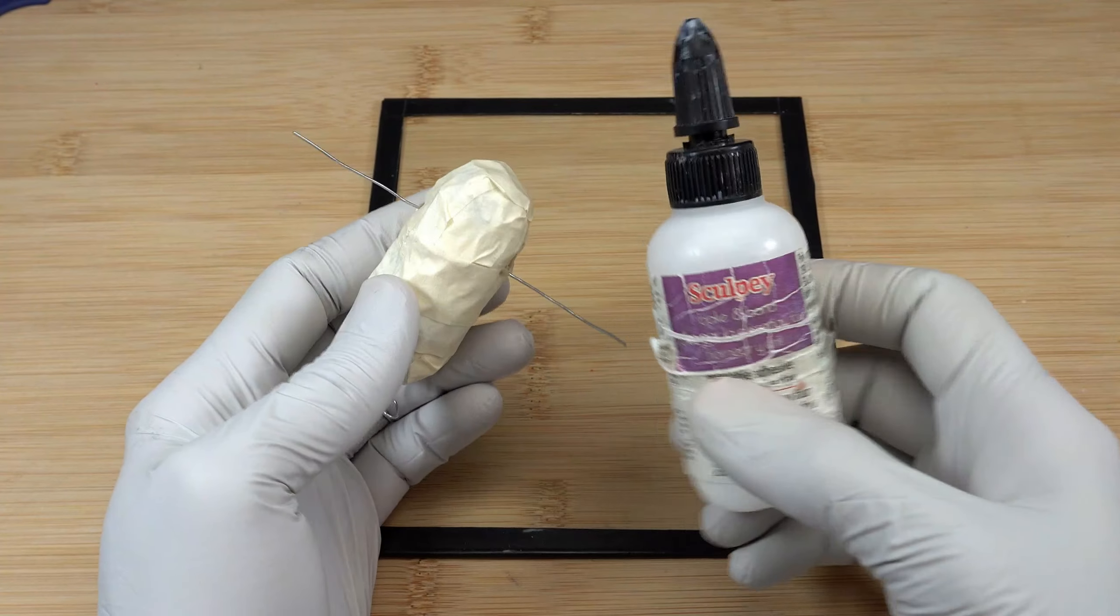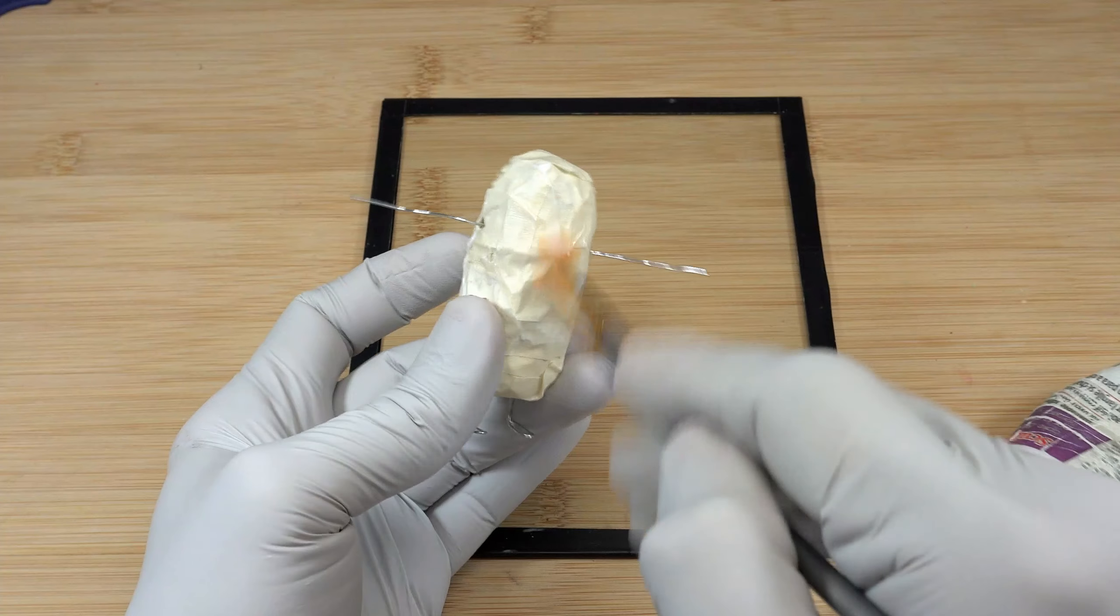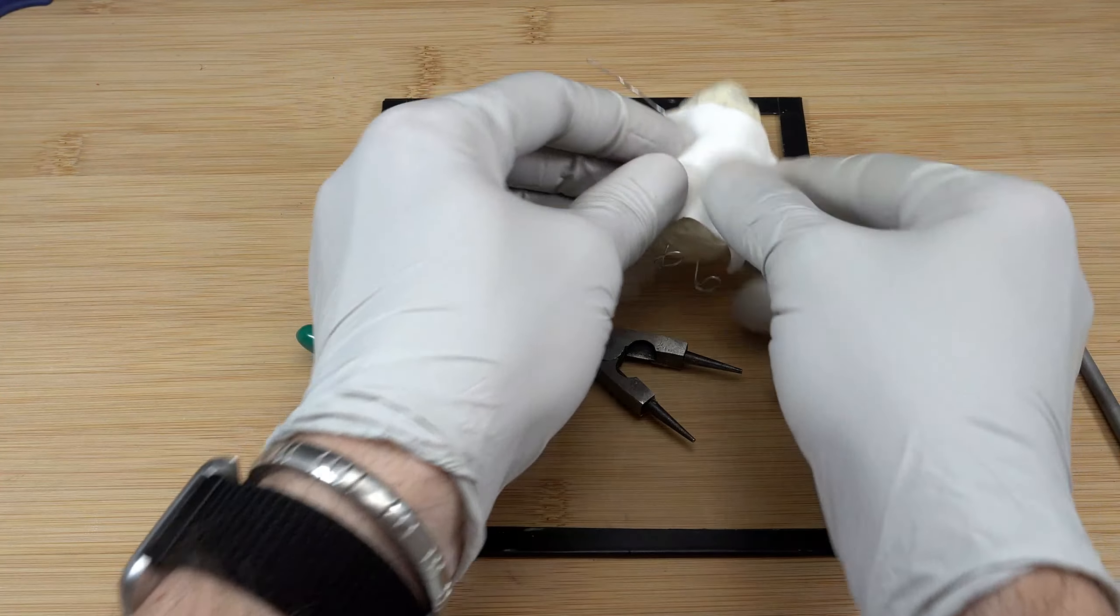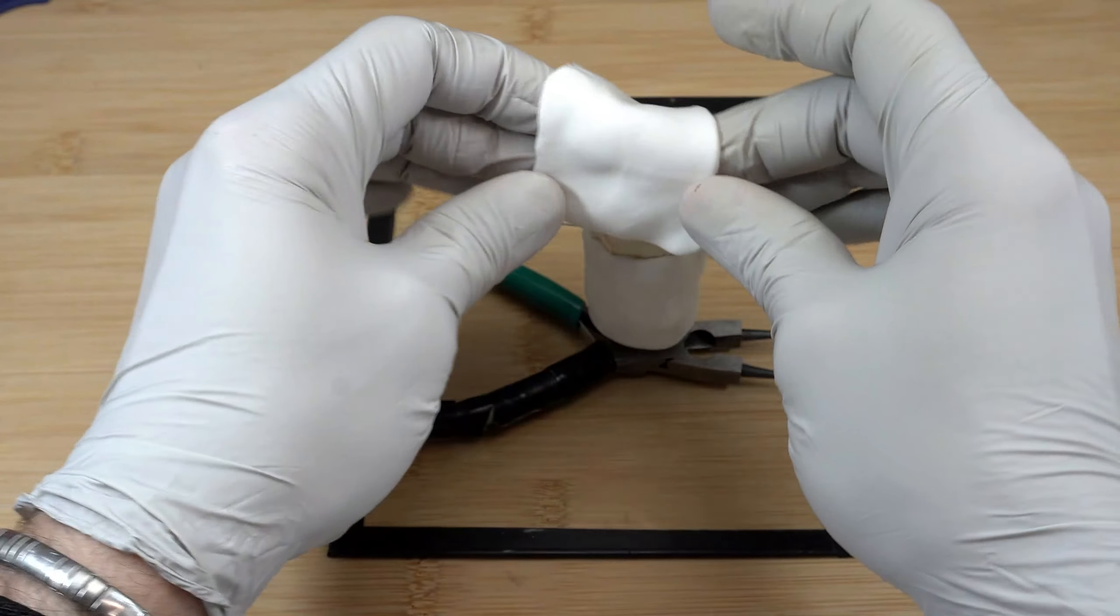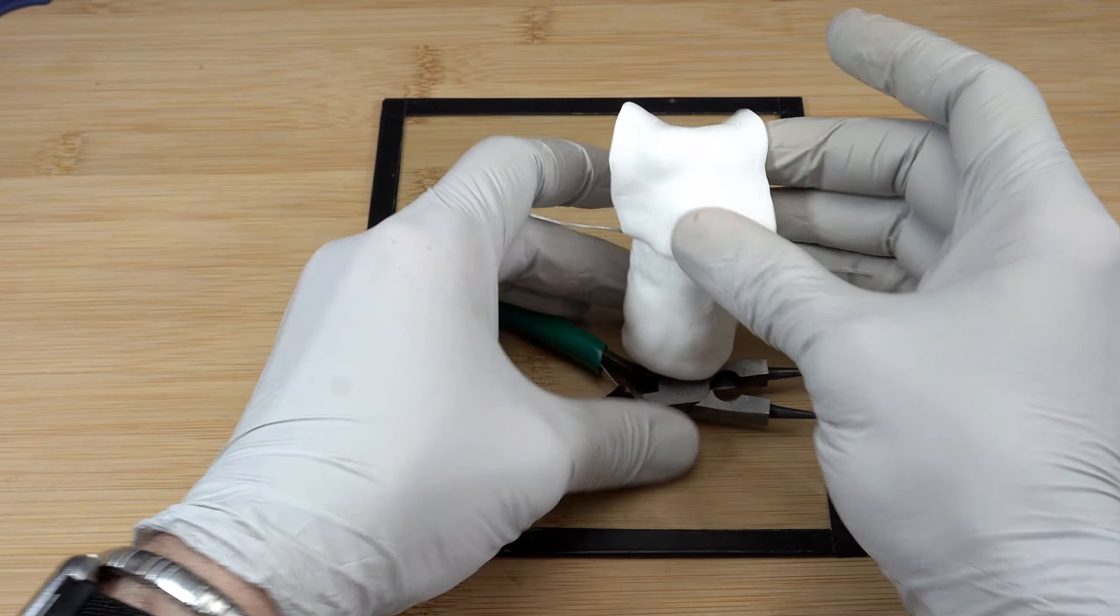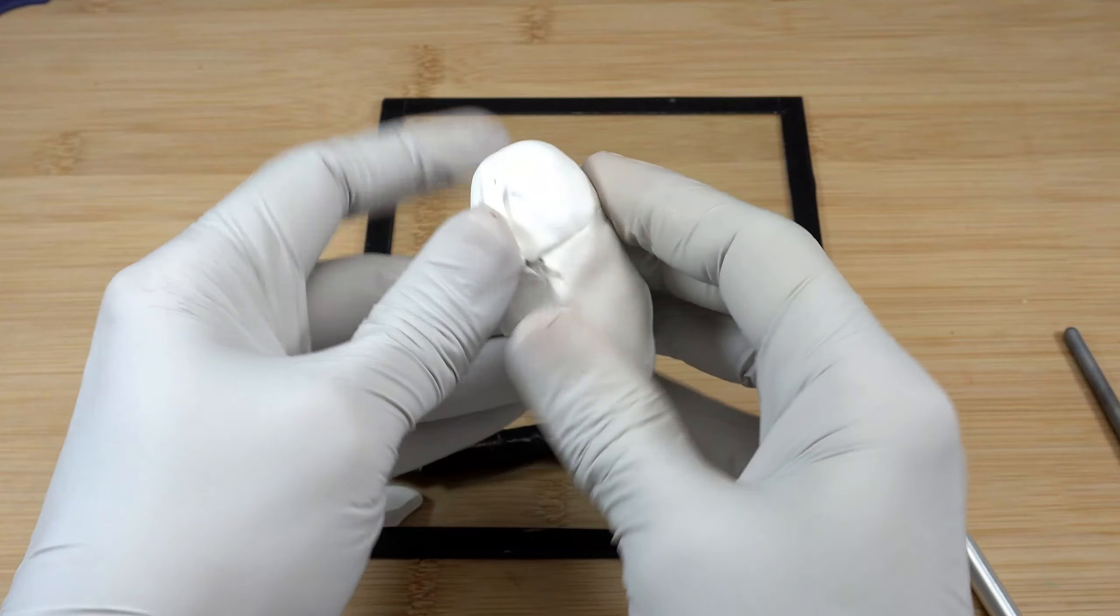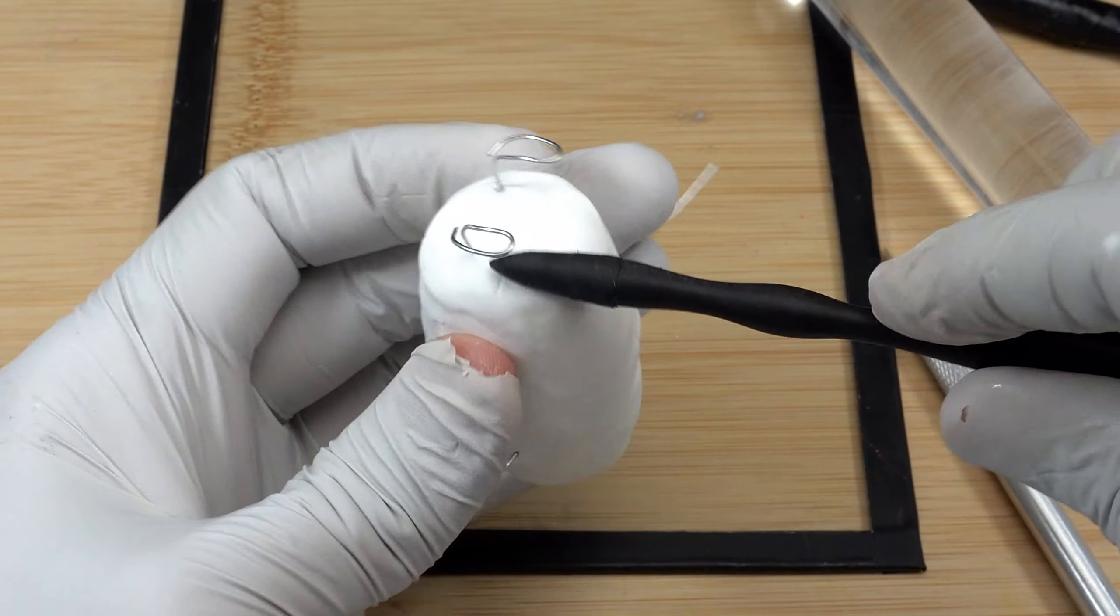I'm using bake and bond to allow the clay to better stick to the armature. Now I'm adding a first layer of white clay. I'm using the hands and the sculpting tool to smooth the clay.